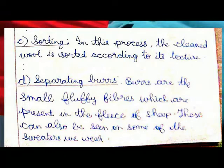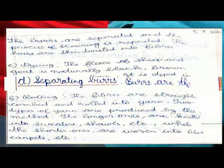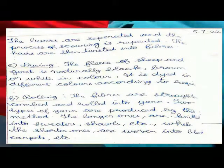Step 4 — Separating Burrs: Burrs are the small fluffy fibers which are present in the fleece of sheep. These can also be seen on some of the sweaters we wear. The burrs are separated, the process of scouring is repeated, and the hairs are then twisted into fibers.